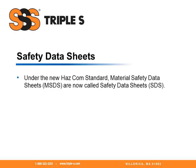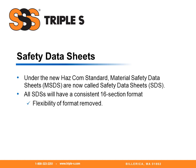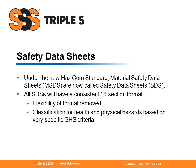Under the new Hazard Communications Standard, Material Safety Data Sheets are now called Safety Data Sheets. All Safety Data Sheets will have a consistent 16-section format. Therefore, the flexibility of formatting has been removed, and classification for health and physical hazards are based on very specific global harmonization system criteria.